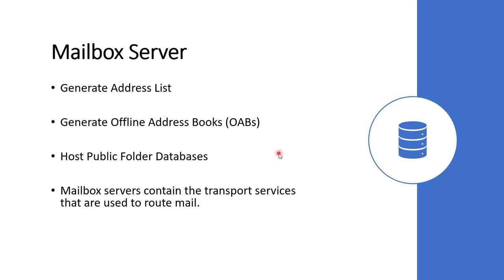The mailbox server role contains the transport services that are used to route email. The routing of email is made through the transport pipeline which is available on the mailbox server. With all these functions, the mailbox server in Exchange 2016 also performs the tasks of both the client access server and mailbox server which were present in Exchange 2013.